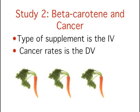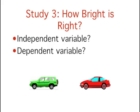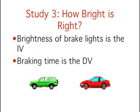Let's do one more example. Example 3: How bright is right? An automobile manufacturer wants to know how bright brake lights should be to minimize the time required for the driver of a following car to brake. What is the independent variable and what is the dependent variable? This is a more difficult example because fewer details are provided, giving you fewer clues. The independent variable is the variable that the experimenter manipulated, namely the brightness of the brake lights. Note that no details are given as to the brightness of the lights or how many levels of the independent variable were tested.